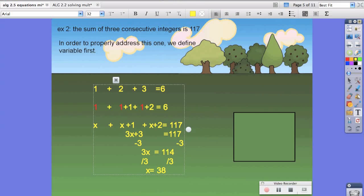So now we know what the first integer is. The next one would be 39, and the next one would be 40.